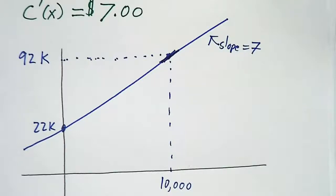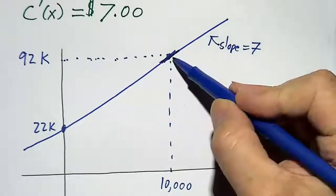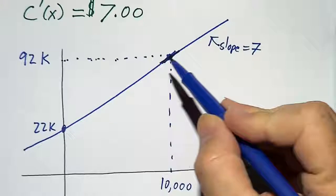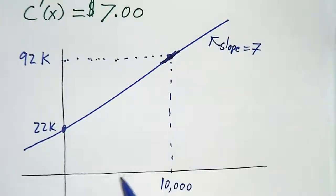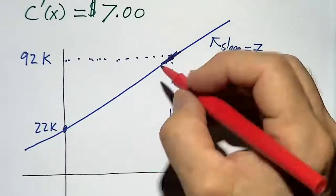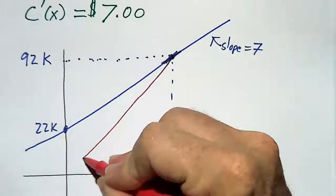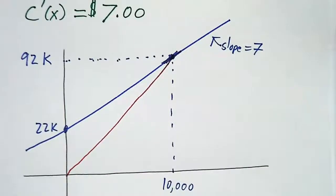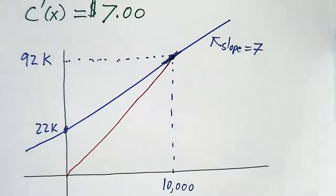What Alice is doing is she's saying, what's the total cost, that's $92,000, divided by the total production, 10,000. Geometrically, what she's doing is figuring out the slope of this line. They're different numbers. They have different uses.